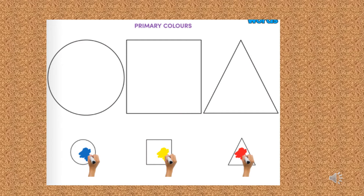What color is the circle? The circle is blue. What color is the square? The square is yellow. What color is the triangle? The triangle is red.